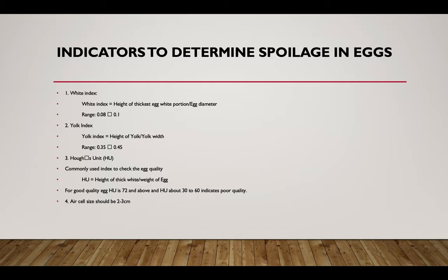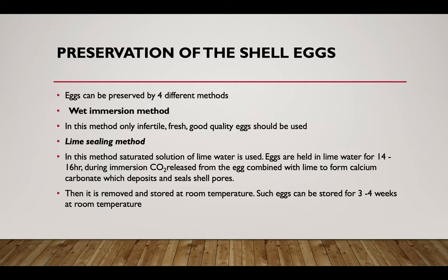Haugh units are commonly used as an index to check egg quality. The Haugh unit equals the height of the thick white divided by the weight of the egg. For good quality eggs, the Haugh unit is about 72. Air cell size should be 2 to 3 centimeters.